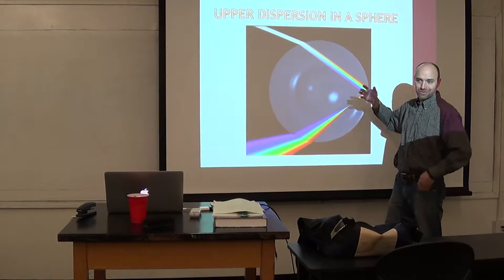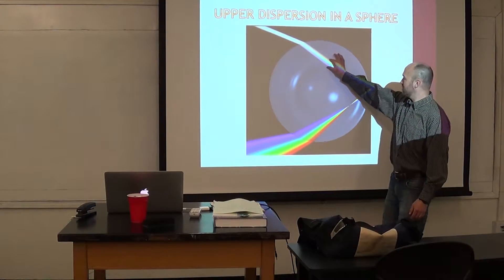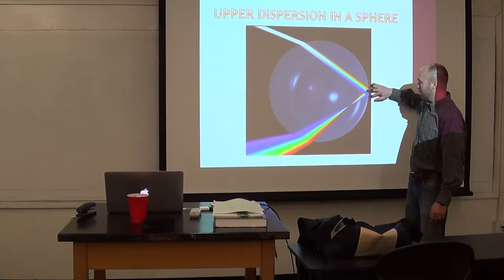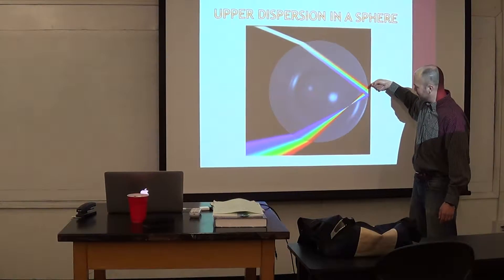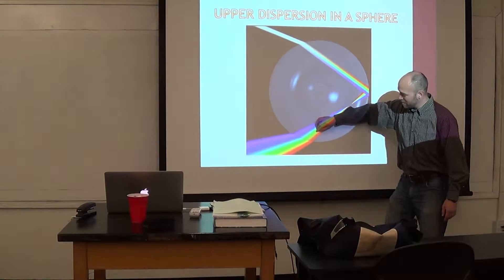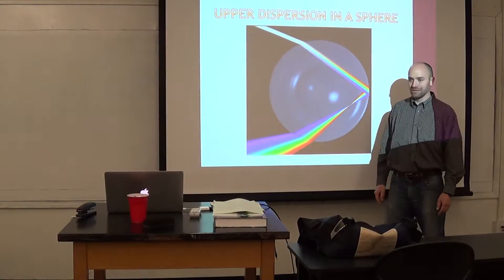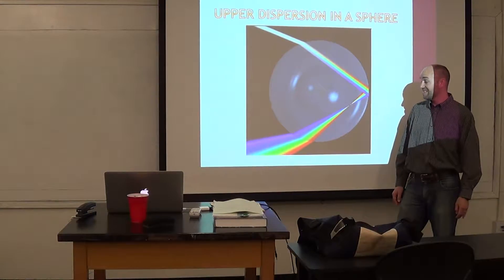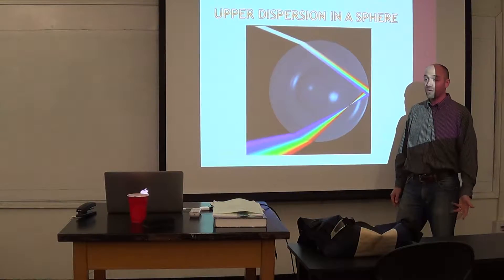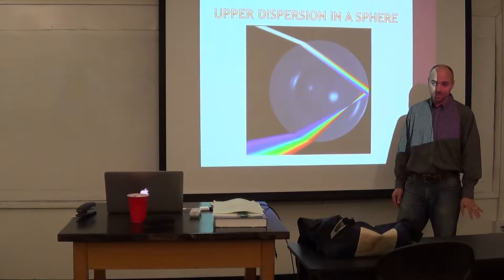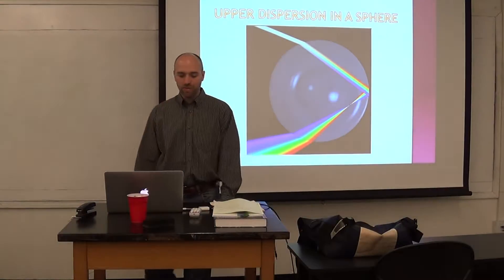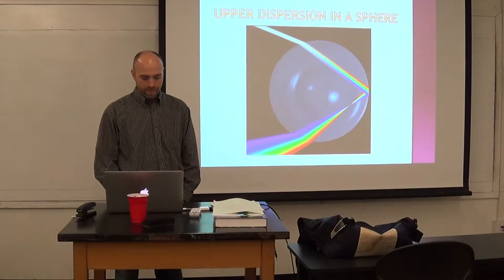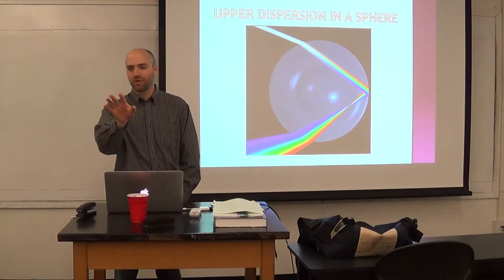We call this dispersion, because it disperses the light. This dispersed light hits the back edge of the sphere and bounces. When it bounces, it flips, and then it disperses again when it exits. You look at this and say, that's interesting - why would I possibly care about such silliness? Well, I'll tell you right here.